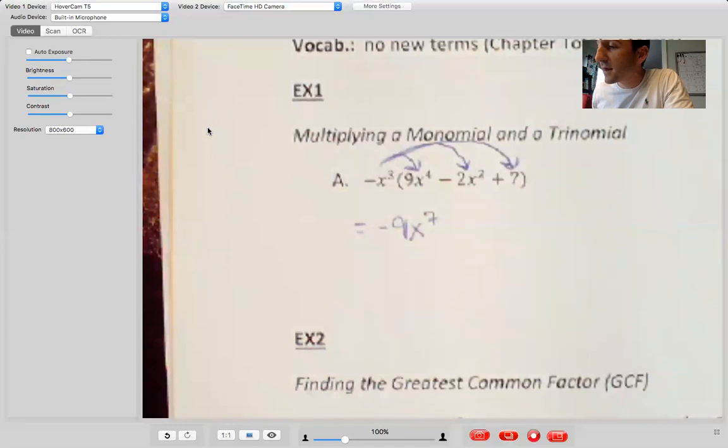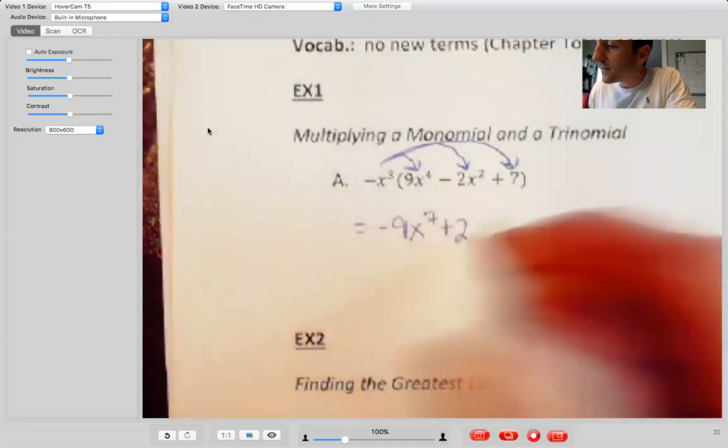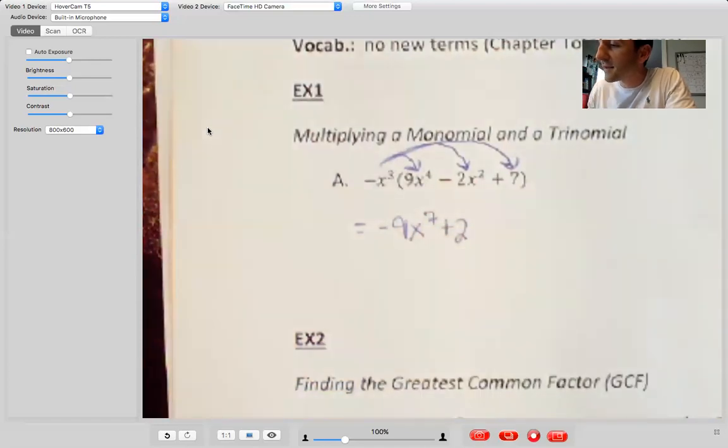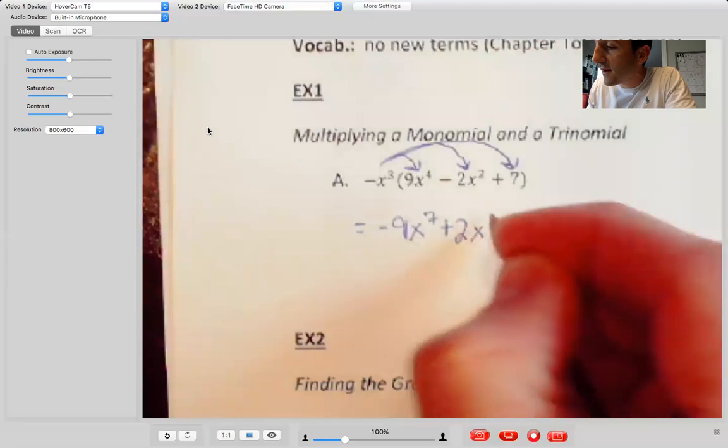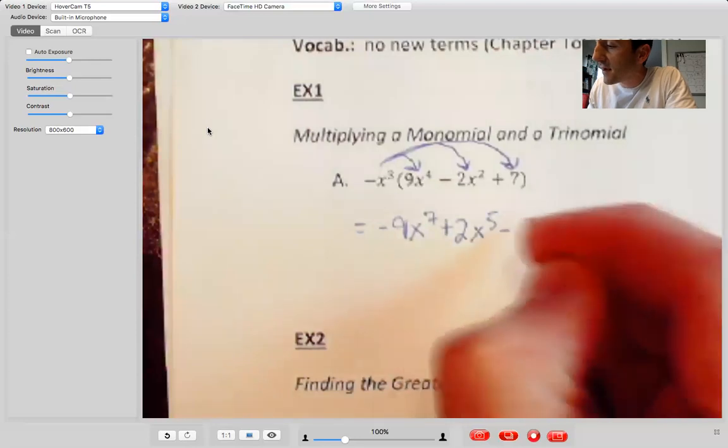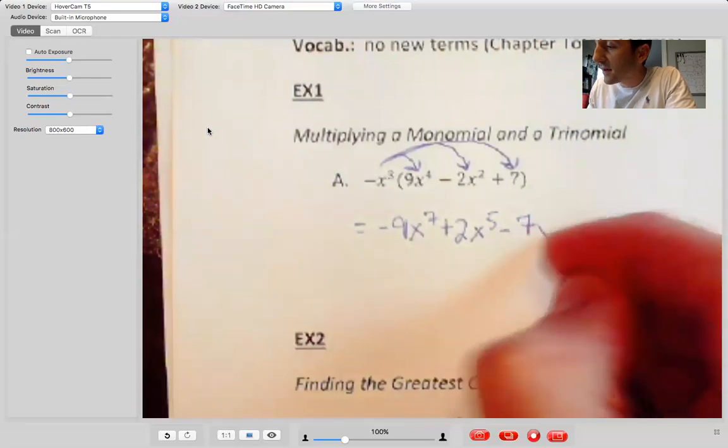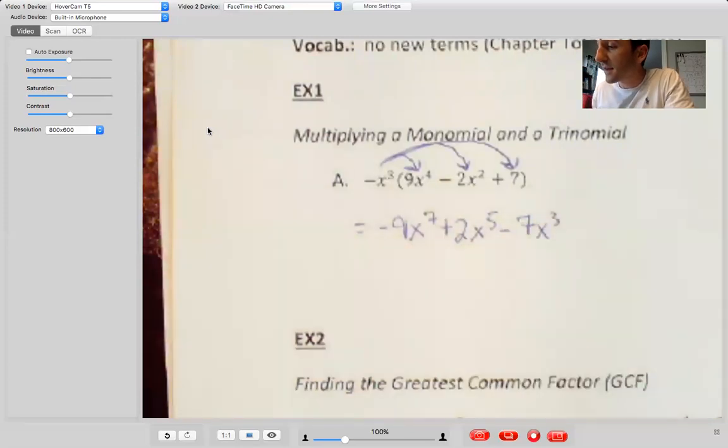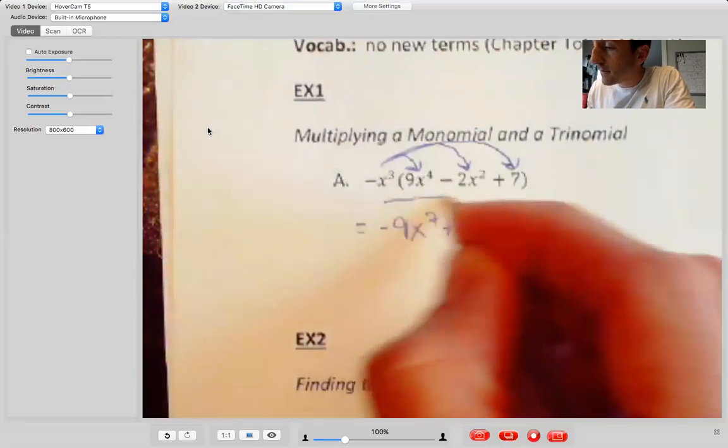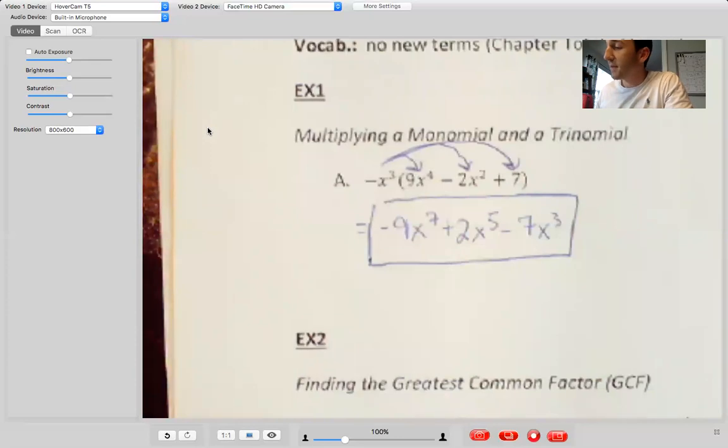My next term is the product of negative 1 times negative 2 is positive 2. x to the 3 times x to the 2 is x to the 5. And then the last term negative 1 times 7 is negative 7. And then we just basically have x to the third that needs to stay attached. Or you can think of that as x to the 3 times x to the 0. So anyways, that's the final answer. Since there are no like terms, we can't really simplify that anymore.